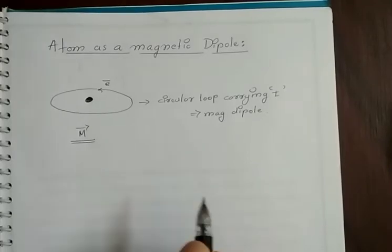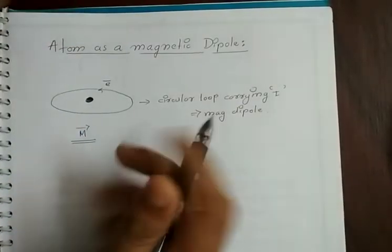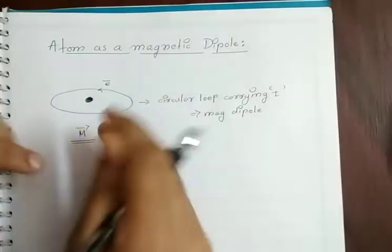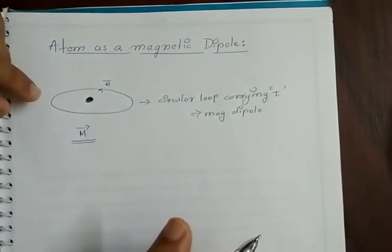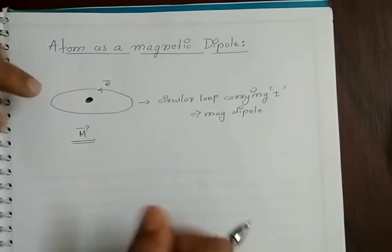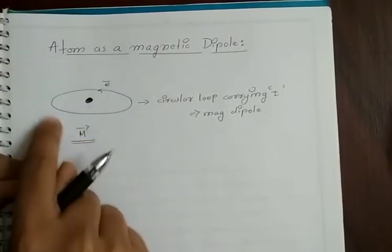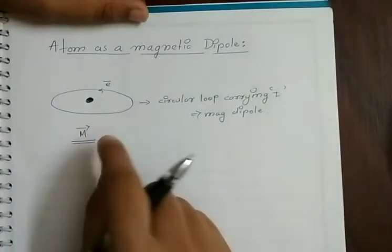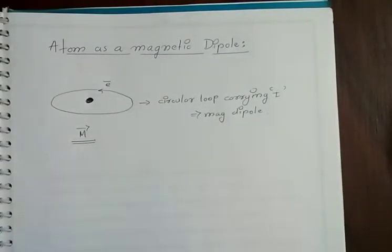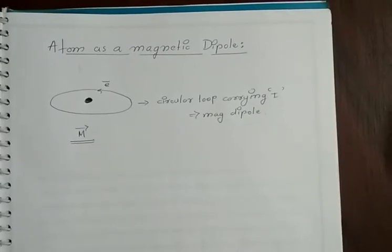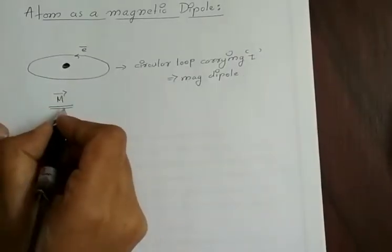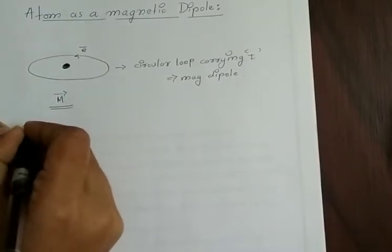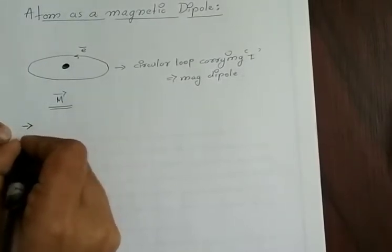Since every matter is made up of atoms, whenever you place a matter in an external magnetic field, these magnetic dipole moments align in a particular direction of the externally applied magnetic field. The magnetic dipole moment M of any atom is basically due to two important motions of the electron.